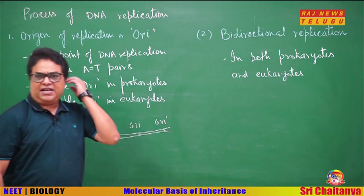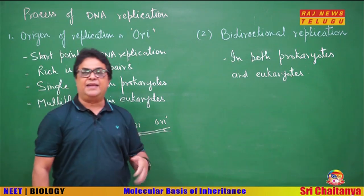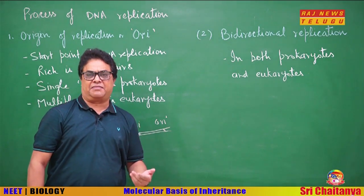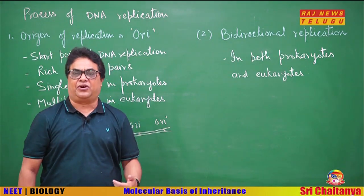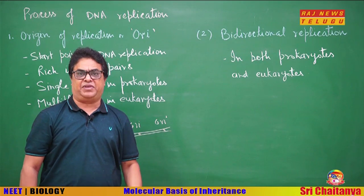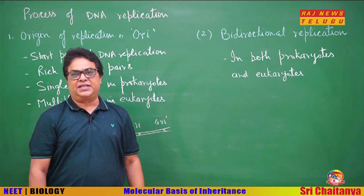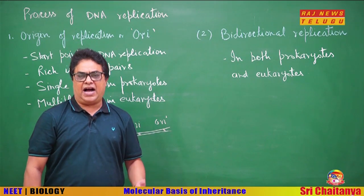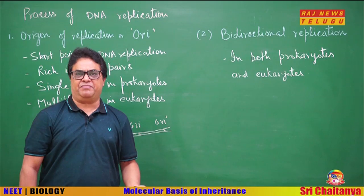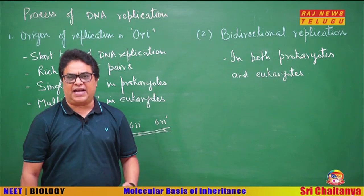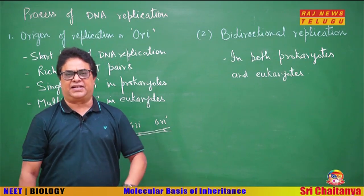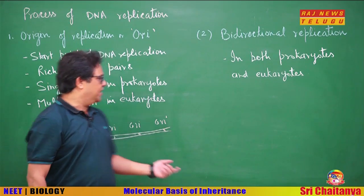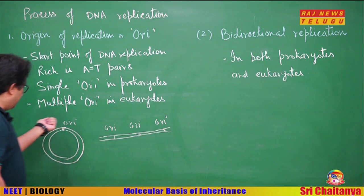The type of ORI also determines the rate of DNA replication. This is called the copy number. A high copy number means the ORI is able to multiply the DNA at a faster rate.